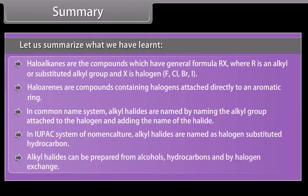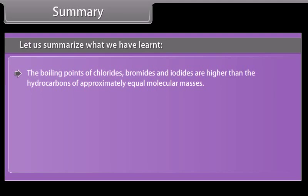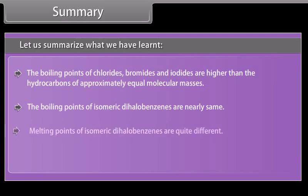Alkyl halides can be prepared from alcohols, hydrocarbons, and by halogen exchange. The boiling points of chlorides, bromides, and iodides are higher than the hydrocarbons of approximately equal molecular masses. The boiling points of isomeric dihalobenzenes are nearly the same. The melting points of isomeric dihalobenzenes are quite different.